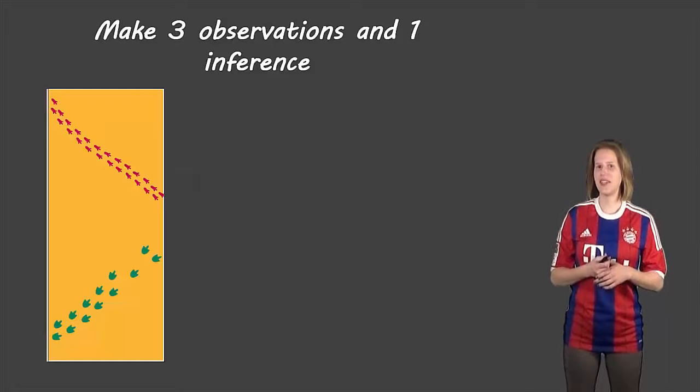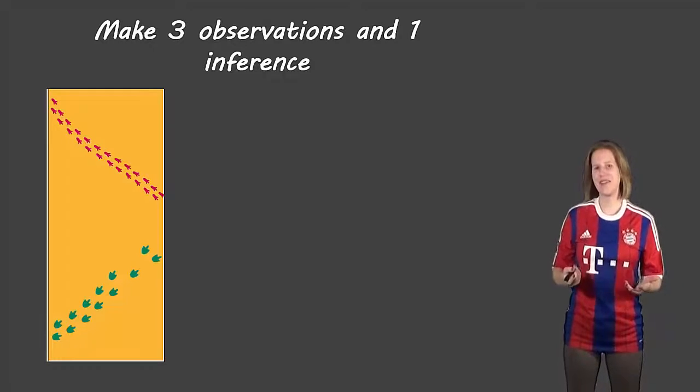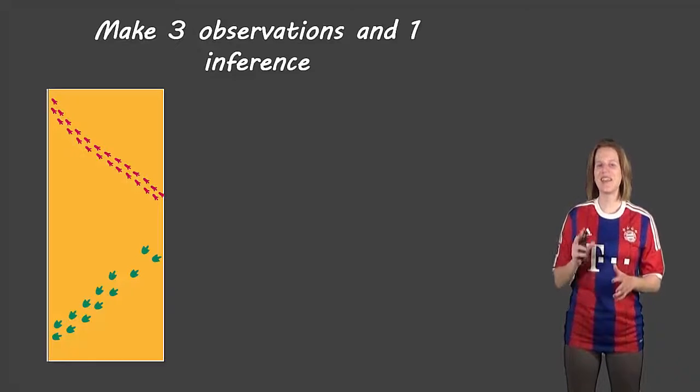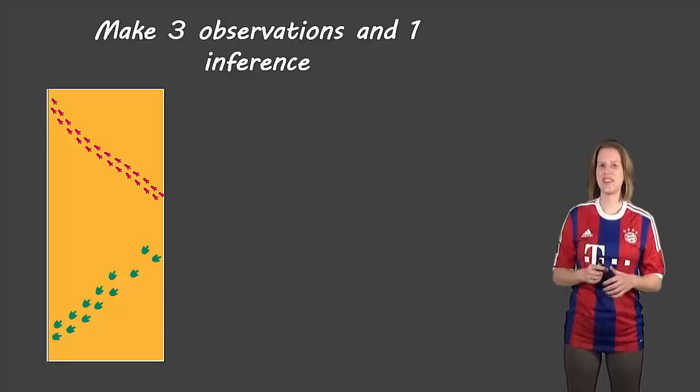So let's do a little activity to just cement that idea. Here I have a picture or part of a picture. I want you to make three observations and one inference about this picture. So pause the video, write these down—three observations and one inference.